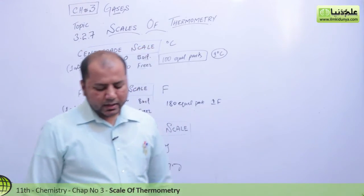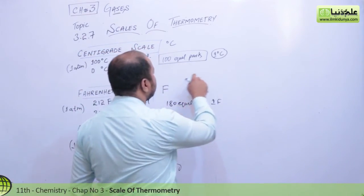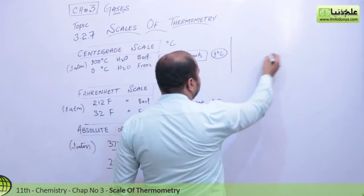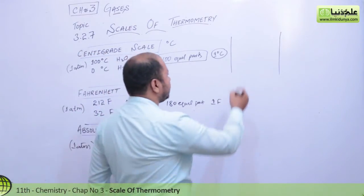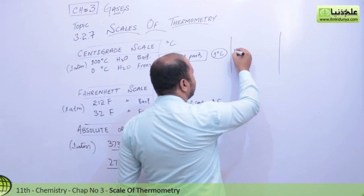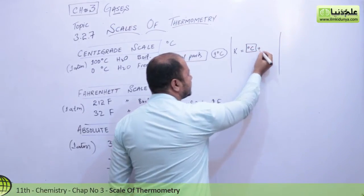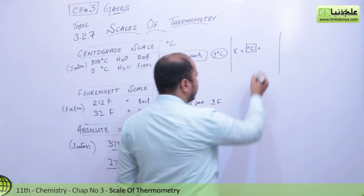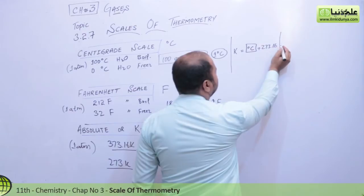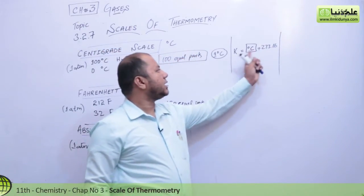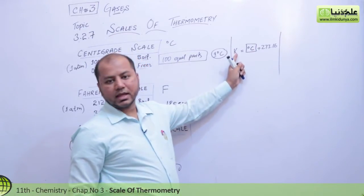If you want to convert degree Celsius into Kelvin, the formula is: whatever temperature you have in degrees, just add 273.16 to it. If you add 273 to the degree value, your Kelvin temperature will come.